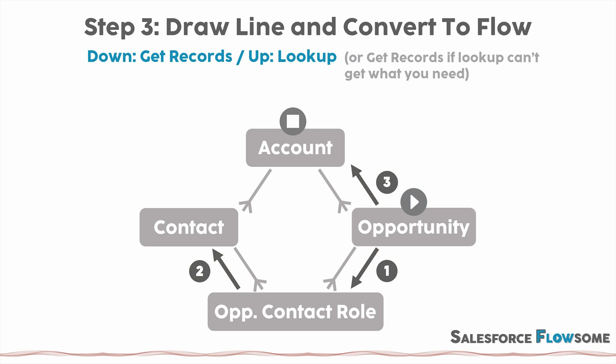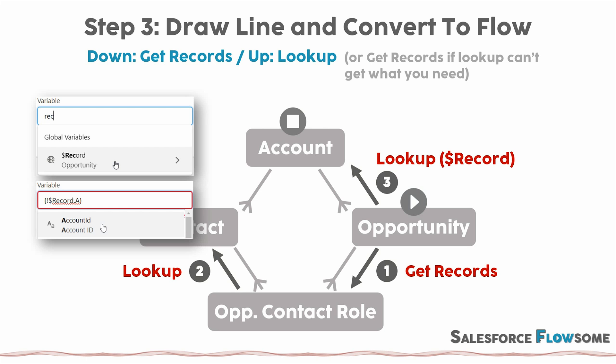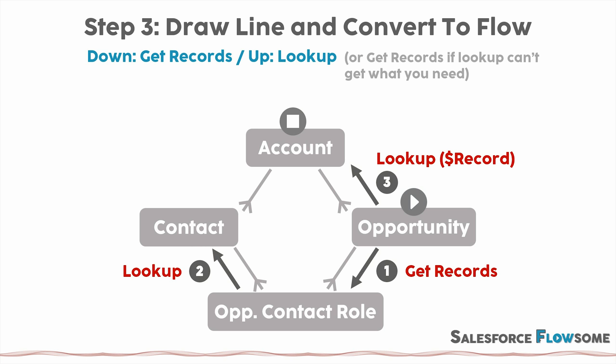The next sub-step is called: down = get records, up = lookup. Many people ask: when should I use get records? The answer is — just look at your data model. If you are going from one object to another downwards, you will need to use get records. If you are going upwards, you will need to use a lookup. Going downwards means going from the parent side to the child side — that's when you use get records. Going upwards means going from the child side to the parent side — in that case you just use a lookup. A lookup lets you find another record's information from the current variable. That's the general rule of when you should use get records and when you don't need to.